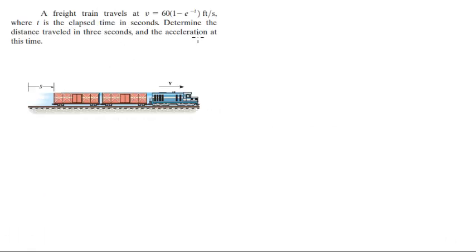A freight train travels at v equals 60 times 1 minus e to the negative t feet per second, where t is in seconds. Determine the distance traveled in 3 seconds and the acceleration at this time.